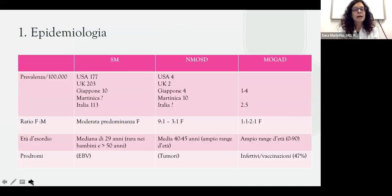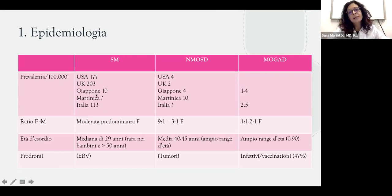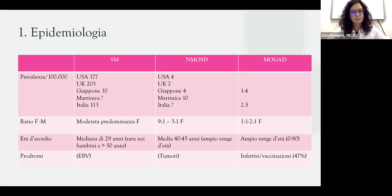Volevo condividere con voi alcune differenze tra queste tre malattie in diversi termini. Il primo di cui volevo parlare è quello epidemiologico. La sclerosi multipla ha una prevalenza molto più alta rispetto alla neuromielite ottica e a MOGAD. In Italia ha una prevalenza di circa 113 persone su 100.000, e nel mondo tende ad aumentare allontanandosi dall'equatore, il che sottende la presenza di fattori genetici o ambientali.